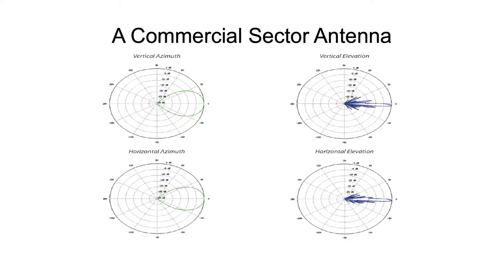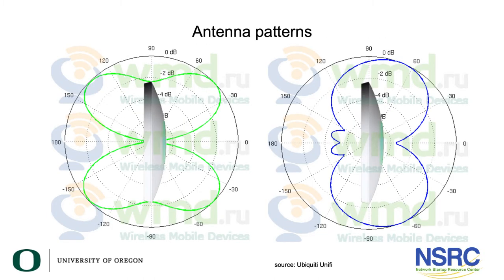Commercial sector antennas are a combination of several patches inside — they look like a long square — and the resulting pattern is a wide beam into one distinct direction. Wide beam can mean anywhere from 30 to 60 degrees. This is the radiation pattern for such a sector antenna: wide in the horizontal plane, and looking at the elevation for both polarities you see a relatively sharp, thin beam width.